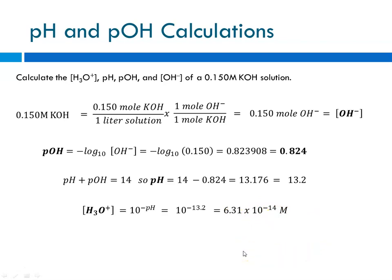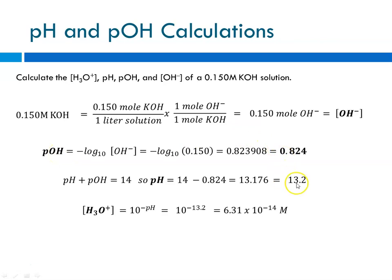Now we know the pH, so we calculate the hydronium ion concentration as 10 to the minus pH. Plugging in 10 to the minus 13.2 gives 6.31 times 10 to the minus 14 molar. From the concentration of a basic solution, we get the hydroxide ion concentration, then pOH, then pH, and finally the hydronium ion concentration. This is Ms. Augustine signing off.